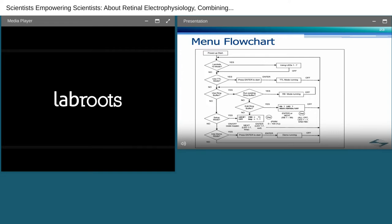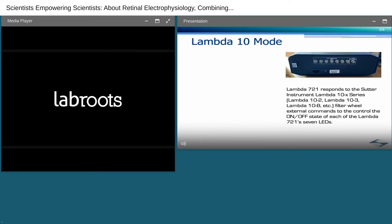On the rear panel, we have BNC input connectors for LED 1-7, ring buffer TTL strobe input BNC, USB interface for computer control. Sutter does provide a USB driver as well as eCoreXSoft for interfacing with Lambda 721 at no charge. And most importantly, the power switch. Here is a flow chart of all the menu selections available on the Lambda 721. Other than demo mode, the next few slides will provide a brief tutorial. In Lambda 10 mode, the Lambda 721 responds to the Sutter instrument Lambda 10X series filter wheel external commands for controlling the on-off state of each of the seven LEDs. These external commands are fully described in the user's manual, which is included with the unit and can also be downloaded from our website.